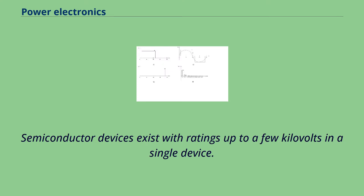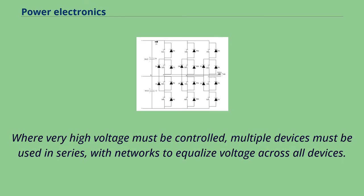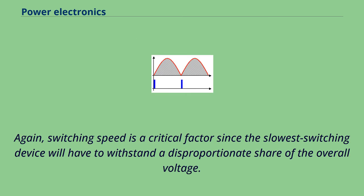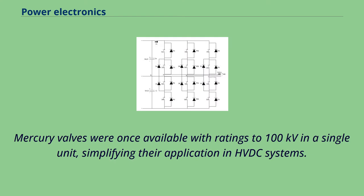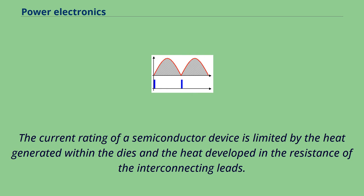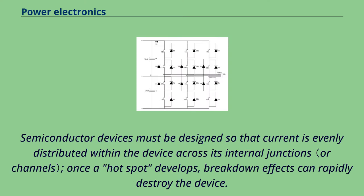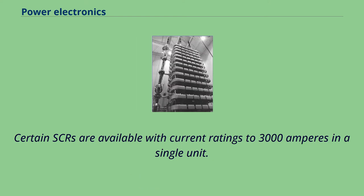Semiconductor devices exist with ratings up to a few kilovolts in a single device. Where very high voltage must be controlled, multiple devices must be used in series, with networks to equalize voltage across all devices. Switching speed is critical since the slowest switching device will have to withstand a disproportionate share of the overall voltage. Mercury valves were once available with ratings to 100 kilovolts in a single unit, simplifying their application in HVDC systems. The current rating of a semiconductor device is limited by heat generated within the dies. Once a hotspot develops, breakdown effects can rapidly destroy the device. Certain SCRs are available with current ratings to 3000 amperes in a single unit.